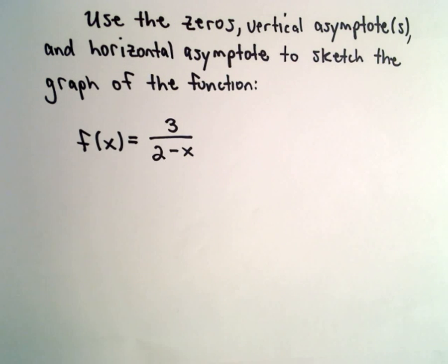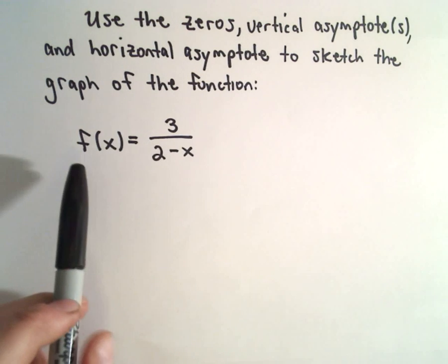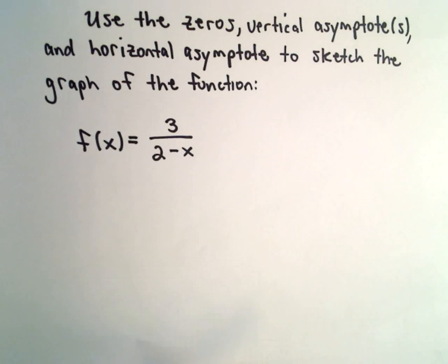Okay, in this example we're going to use the zeros, the vertical asymptotes, and the horizontal asymptote to sketch the graph of the function f of x equals 3 over 2 minus x.